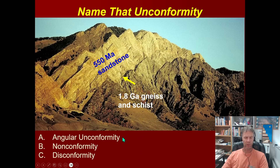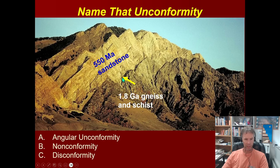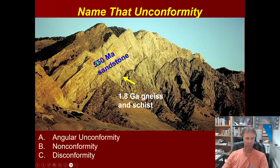Let's do a couple more. Here we have 1.8 billion-year-old gneiss and schist sitting underneath 550 million-year-old sandstone, in northern Utah north of the town of Ogden — a really beautiful spot. Looking at the unconformity, the rocks below are metamorphic, while the rocks above are sedimentary, which makes this a nonconformity. That contact represents almost 1.3 billion years of Earth's history encapsulated in a single surface.